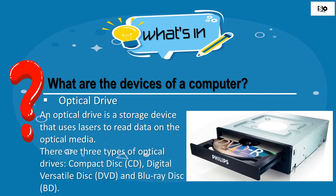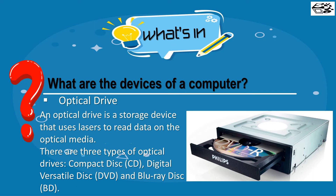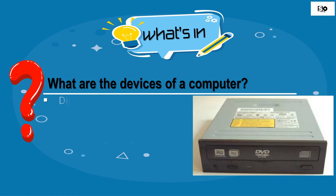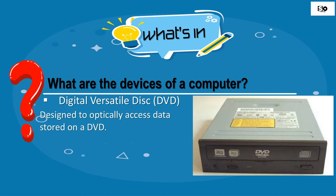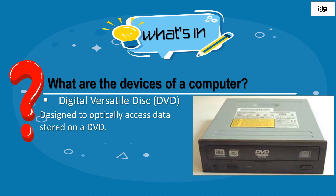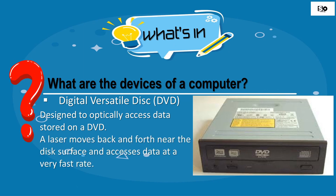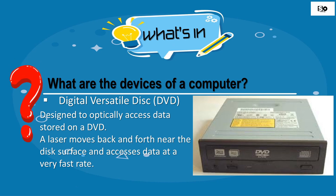There are three types of optical drives: compact disc, digital versatile disc, and Blu-ray disc. Digital Versatile Disc, or the DVD, is designed to optically access data storage on a DVD. A laser moves back and forth near the disc surface and accesses data at a very fast rate.